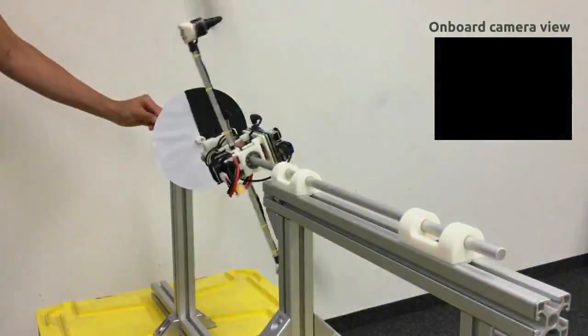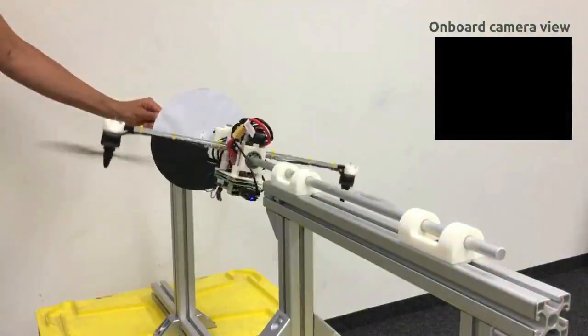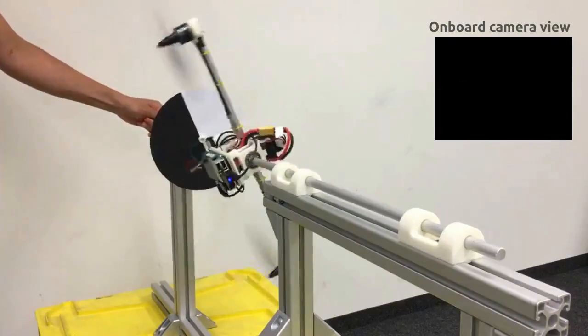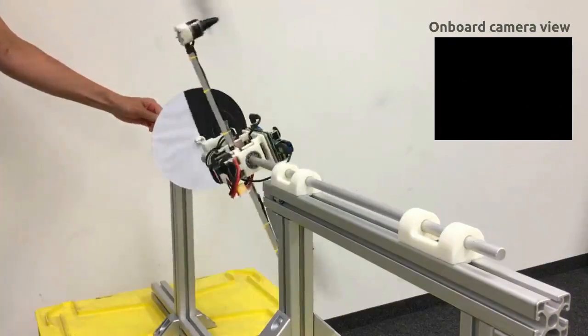The control task is simplified to a one-dimensional horizon-tracking problem, in which the dual-copter is to orient itself with the line marked by a black-and-white disk.